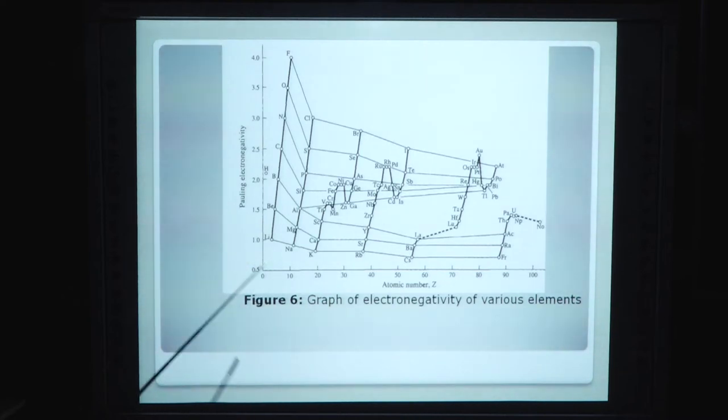In this graph, the electronegativity increases from lithium, beryllium, boron, carbon, nitrogen, oxygen, fluoride. Then sodium, magnesium, aluminum, silicon, phosphorus, sulfur, chlorine. Then potassium, calcium, scandium, titanium, vanadium, chromium, iron, cobalt, nickel, copper, zinc, gallium, germanium, arsenic, selenium, bromine and so on.